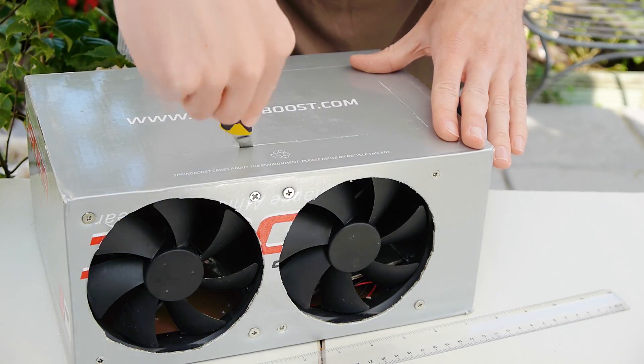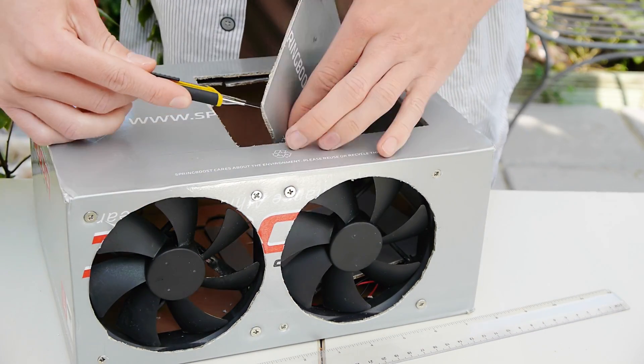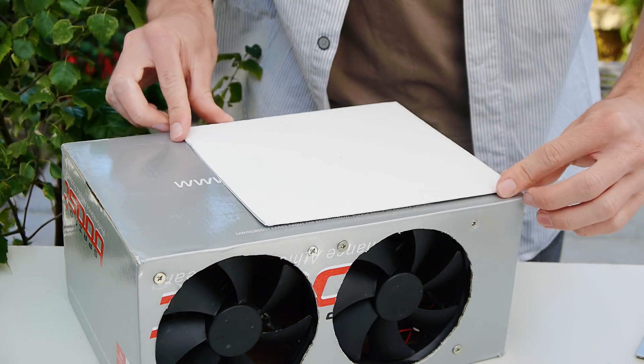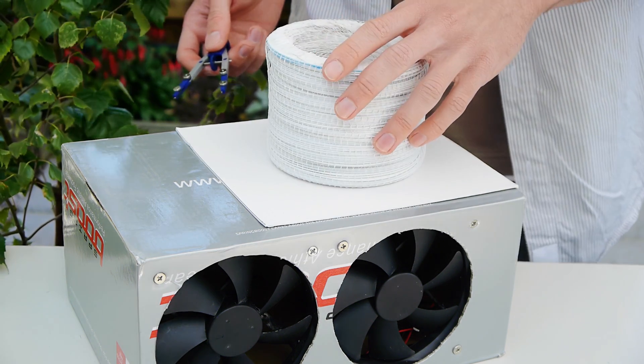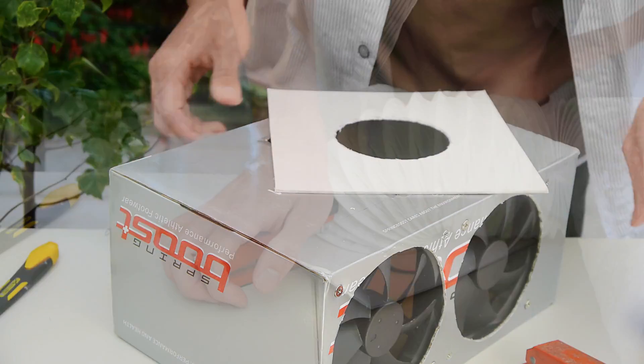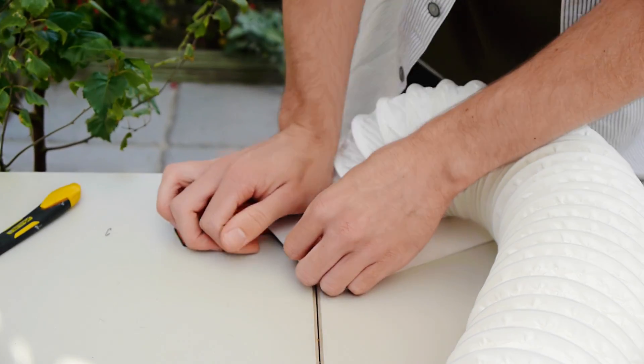So the next step is to cut out a square in the side of the box, and trim down a piece of cardboard to fit over it. Now we can mark out a circle on this cardboard that's just slightly smaller than the diameter of the ducting, and use a stapler to attach the two together.